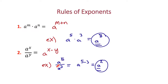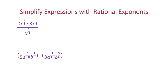Remember, the a's would reduce — there are 5 on top and 3 on the bottom; 3 of them reduce on top and bottom, leaving 2 on top. Now we're going to simplify with rational exponents using those rules of adding and subtracting.